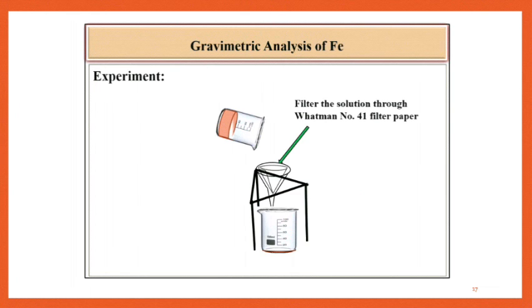Filter the supernatant solution through Wattman filter paper No. 41 by decantation method. Then transfer the precipitate carefully to the filter paper. Wash this precipitate using hot 2% ammonium nitrate solution. Give minimum 2 washings with ammonium nitrate solution.